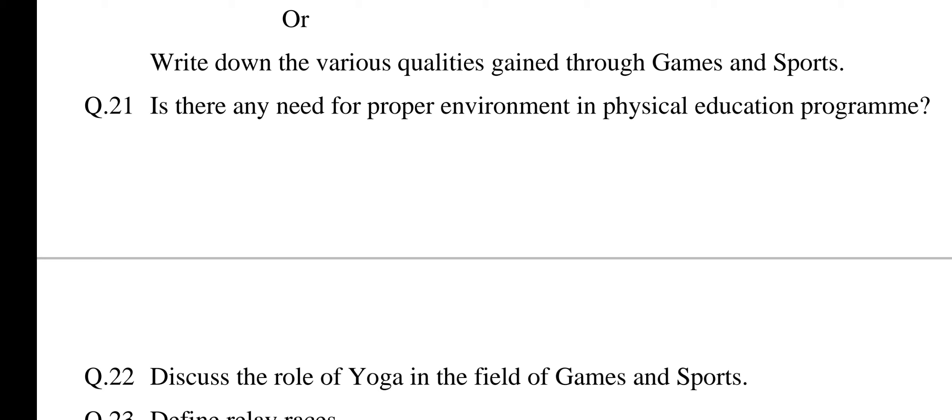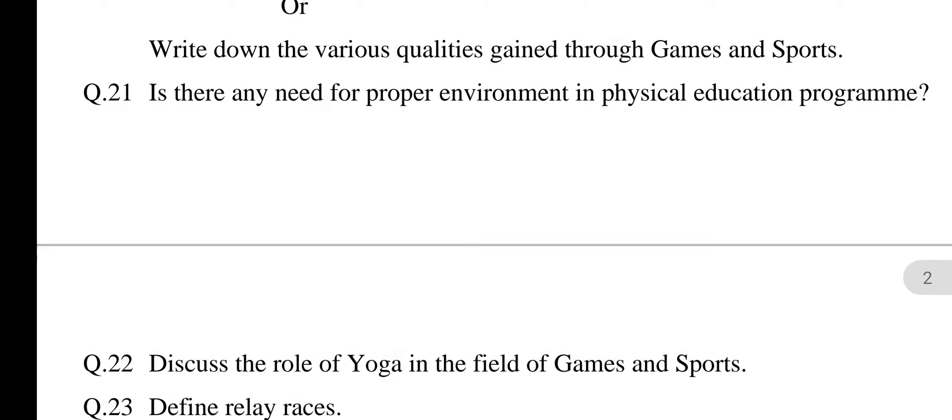Or: Write down the various qualities gained through games and sports. Also from Chapter 3 — Sociological Aspects. Many qualities are gained through games and sports: 1: Dutifulness, 2: Cooperation, 3: Emotional balance, 4: Honesty, 5: Punctuality, 6: Self-confidence, 7: Courteousness, 8: Right judgment, 9: Loyalty, 10: Sympathetic behavior. Explain all these points in two to three lines.